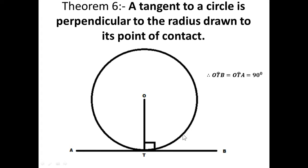What do we mean by a tangent? A tangent is a line drawn to touch a point on the circumference of a circle. As you can see on the screen, line AB is a tangent because it touches the circumference of the circle at point T. A tangent touches the circle at exactly one point.